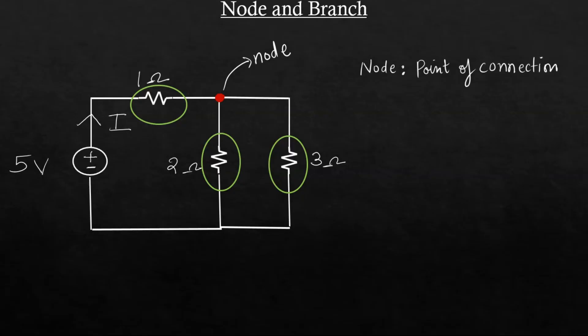So a node is a point of connection of multiple elements. Then what is a branch? A branch is a wire or any circuit element which connects two nodes.